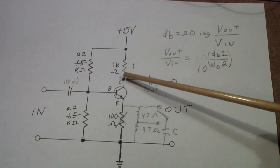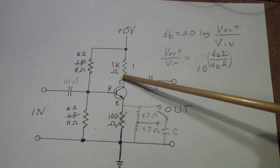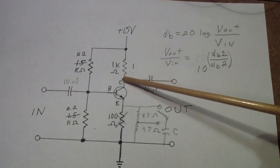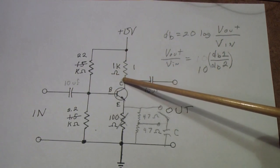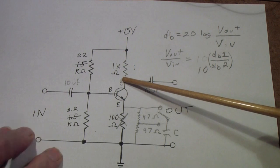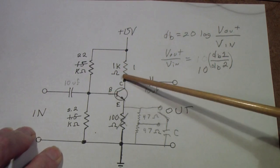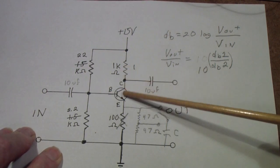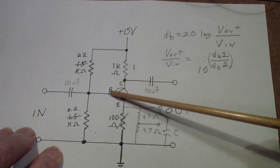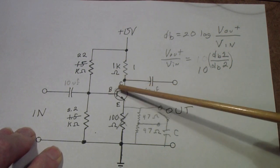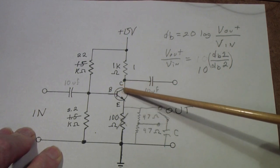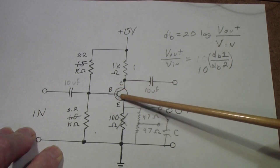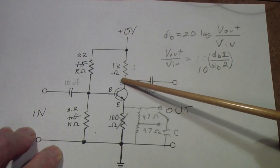Suppose that you have a 10 picofarad capacitor between the collector and the base. If you do, the high frequency response will not be affected by 10 picofarads. It will be affected as though, if this stage gain is 10, you had 100 picofarads. In other words, the 10 picofarads that's physically there is multiplied by the voltage gain of the stage.